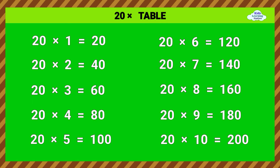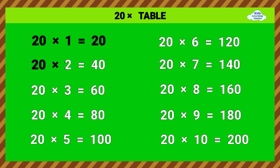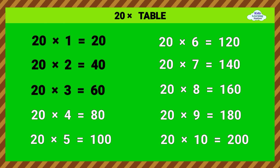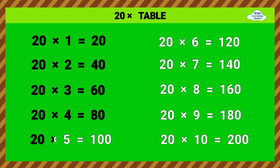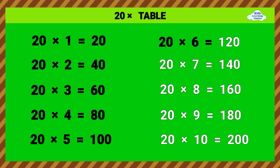20 times table. 20 times 1 equals 20. 20 times 2 equals 40. 20 times 3 equals 60. 20 times 4 equals 80. 20 times 5 equals 100. 20 times 6 equals 120.